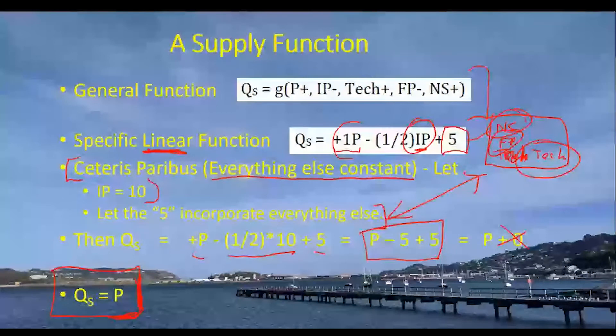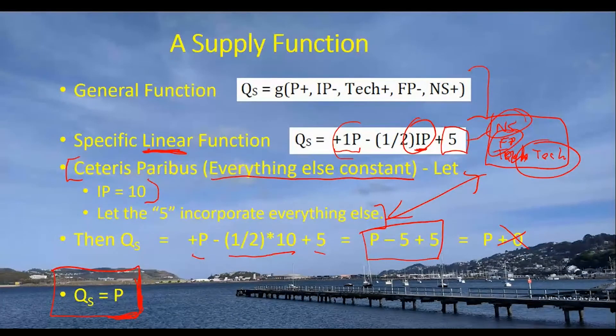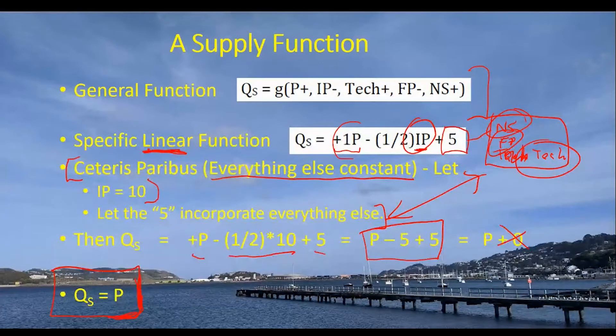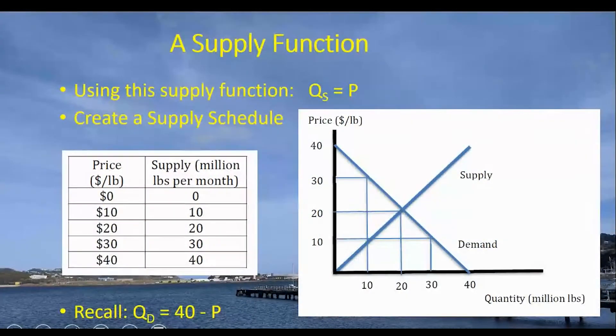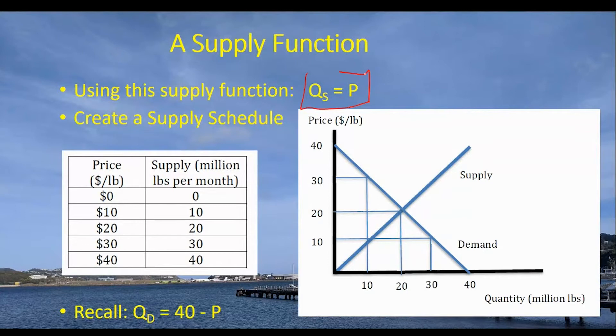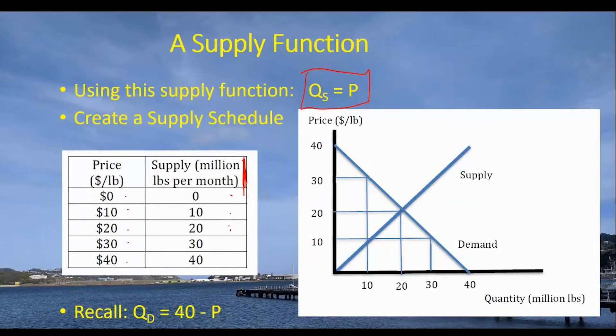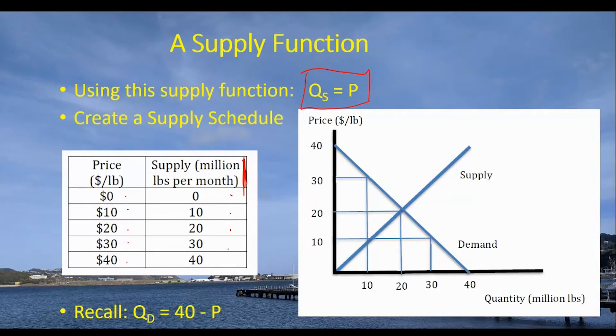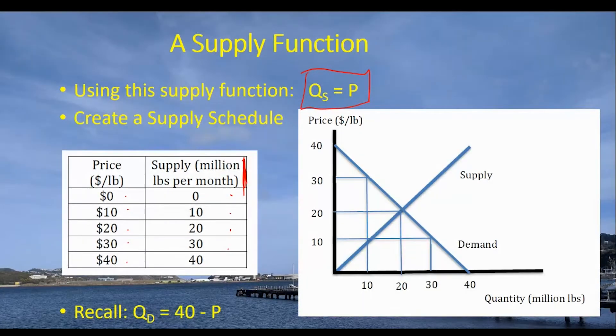But I want you to recognize that when we write this supply function down here on the bottom left, we have in mind that we've got values for the input prices and the number of sellers and the future prices and the technology. All of those are affecting the shift parameter here, which, as it turns out, is zero for the moment. So ceteris paribus prevails when we talk about the supply function and moving up and down it. Now, we could take that particular supply function, QS is equal to P, and we could plot it really easily. We could create a schedule. Prices zero, 10, 20, 30, 40, respectively. Quantity supplied, using the terminology that the quantity is in millions of pounds when the price is given at a particular dollar per pound value. And so it's zero, 10, 20, 30, 40 million pounds per month is what we're getting for the total quantity supplied.